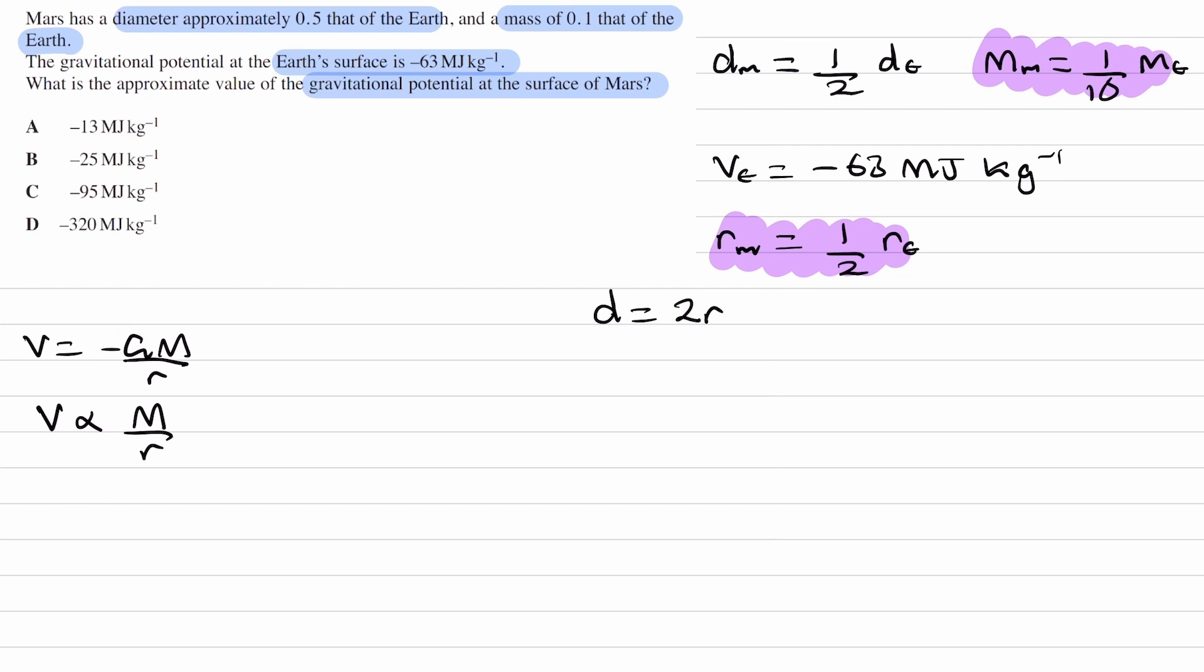Now we can think about what happens to the mass and radius as we go from Earth to Mars. The mass is a tenth of what it was before, and the radius is a half of what it was before. Replace M and r in this proportionality with the factor by which they change. The mass gets multiplied by a tenth, the radius halves, and V will get multiplied by whatever this is. A tenth divided by a half is a fifth. So V gets multiplied by a fifth.